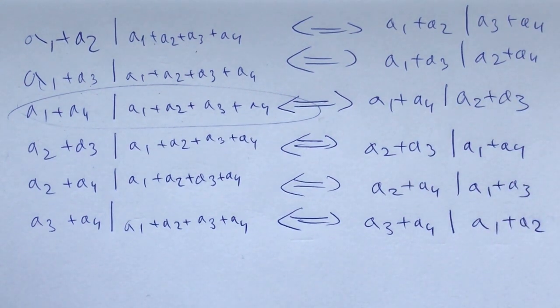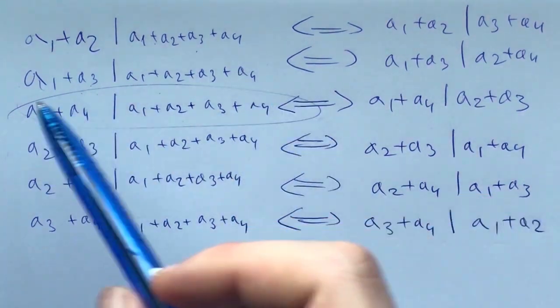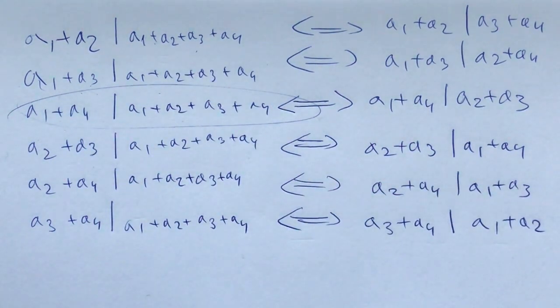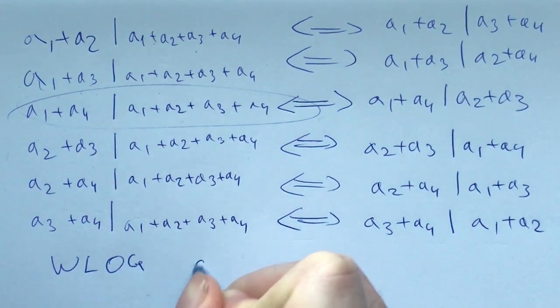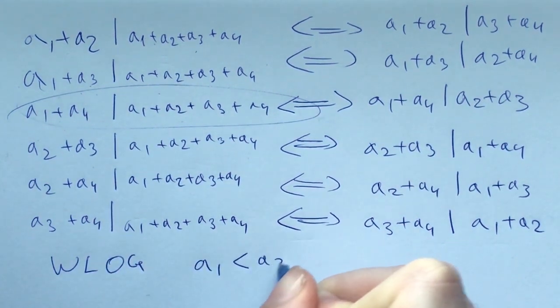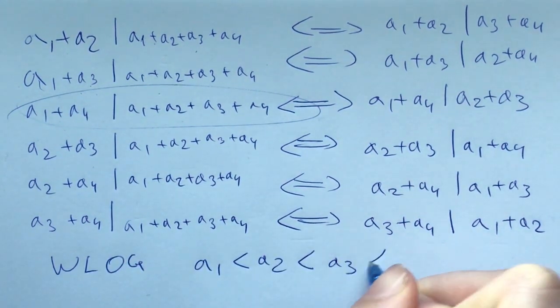The first thing you see from here is that if each and every one of these sums were true, then all the numbers would be equal, which would contradict their distinctiveness. Now this is a common strategy in algebra and number theory: when you're given general numbers a1, a2, a3, a4, sometimes you can impose a condition without losing any generality.